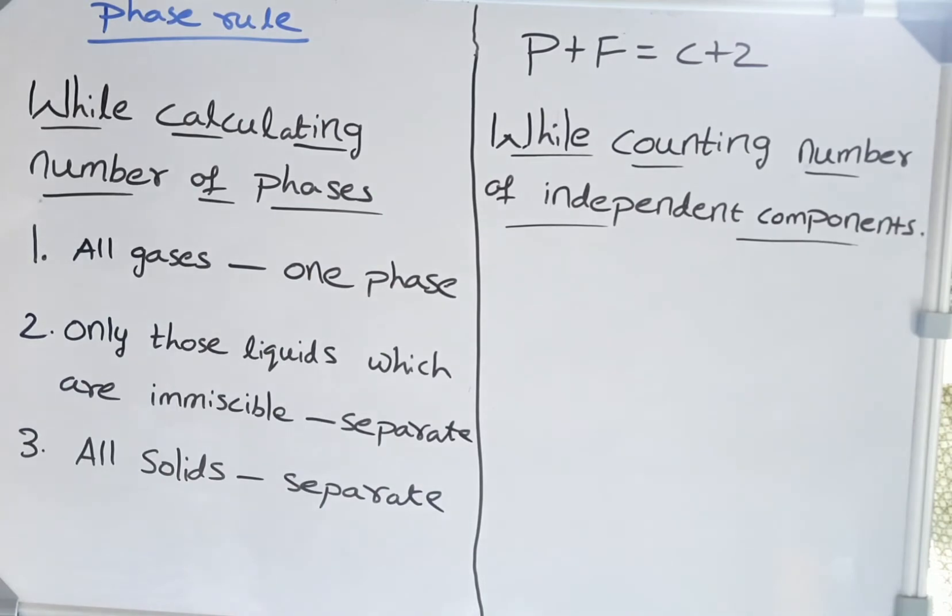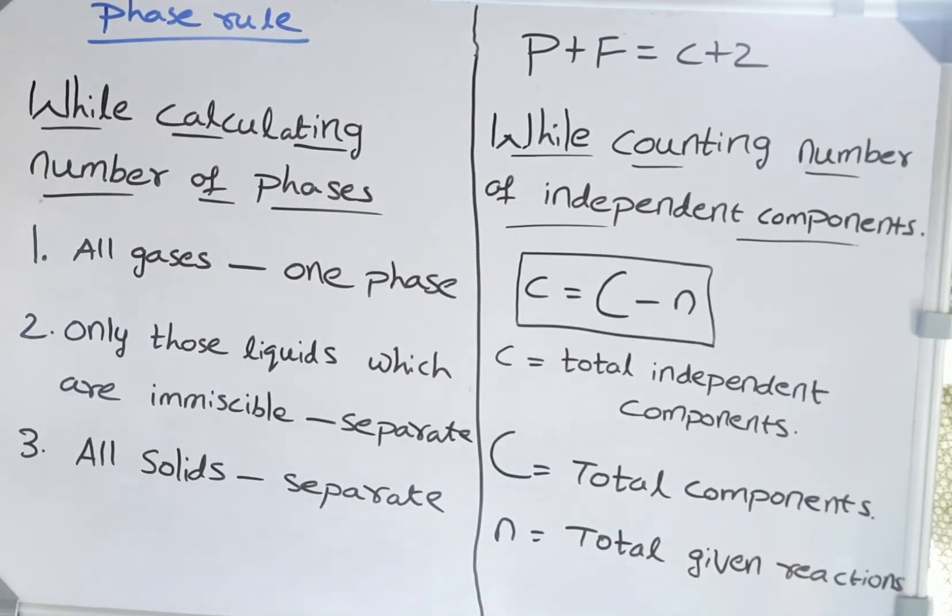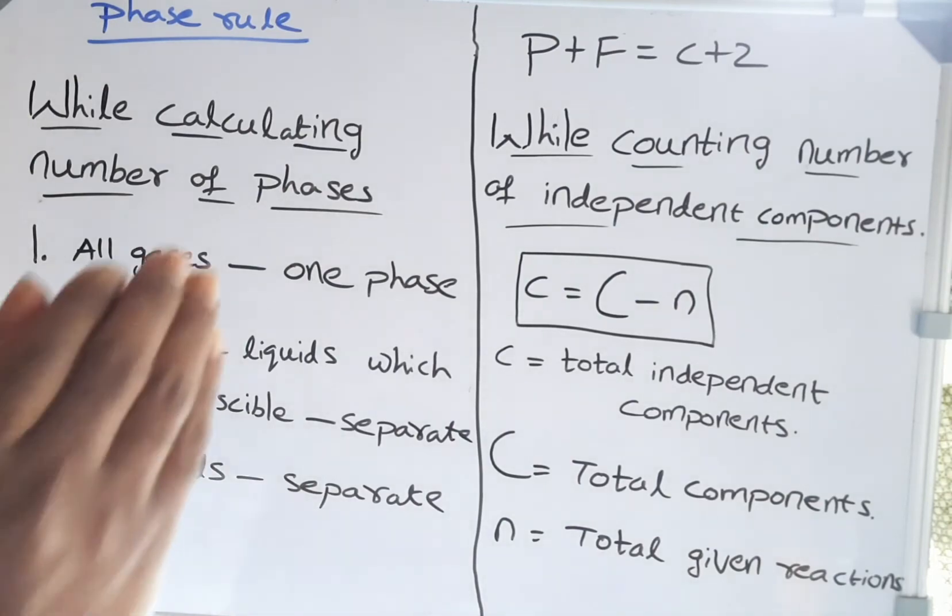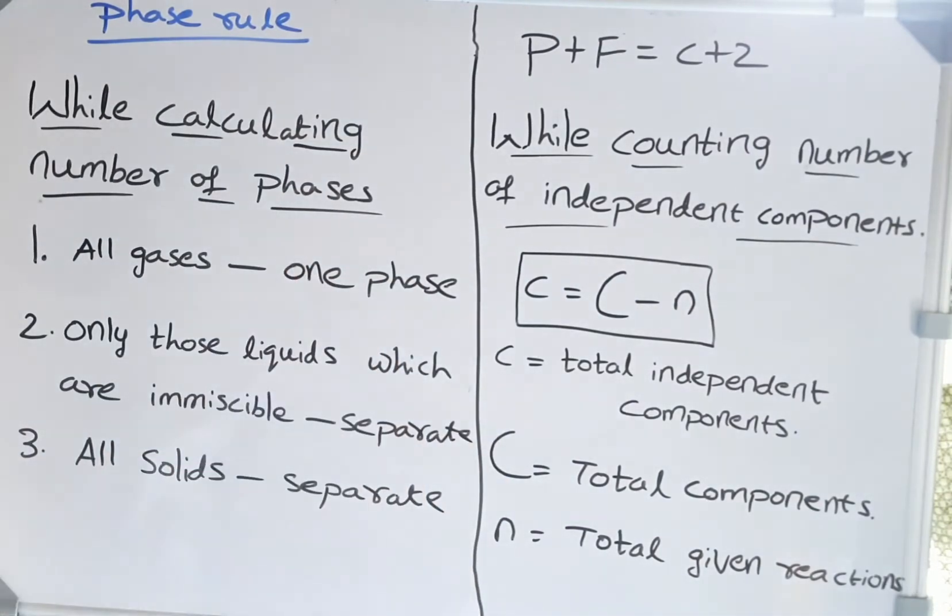Let's discuss important points while counting independent components. Here, P + F = C + 2, where C is the total number of independent components. Whenever a question is given, we need to look for the total number of independent components. When a reaction is given, the total number of independent components becomes total components in the system minus one.